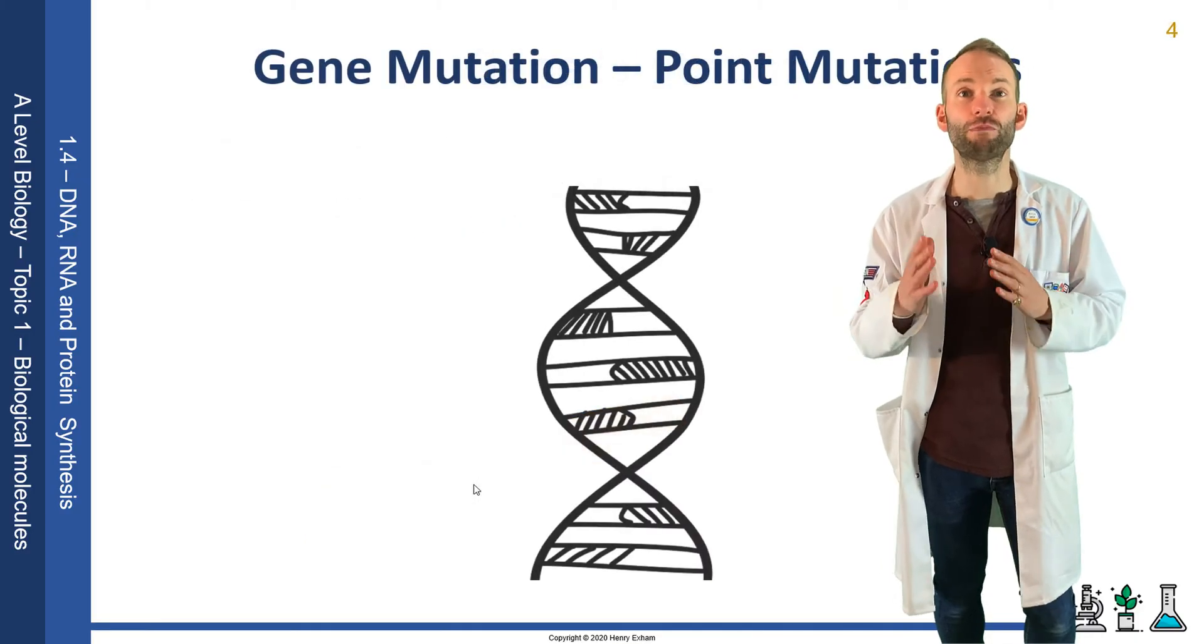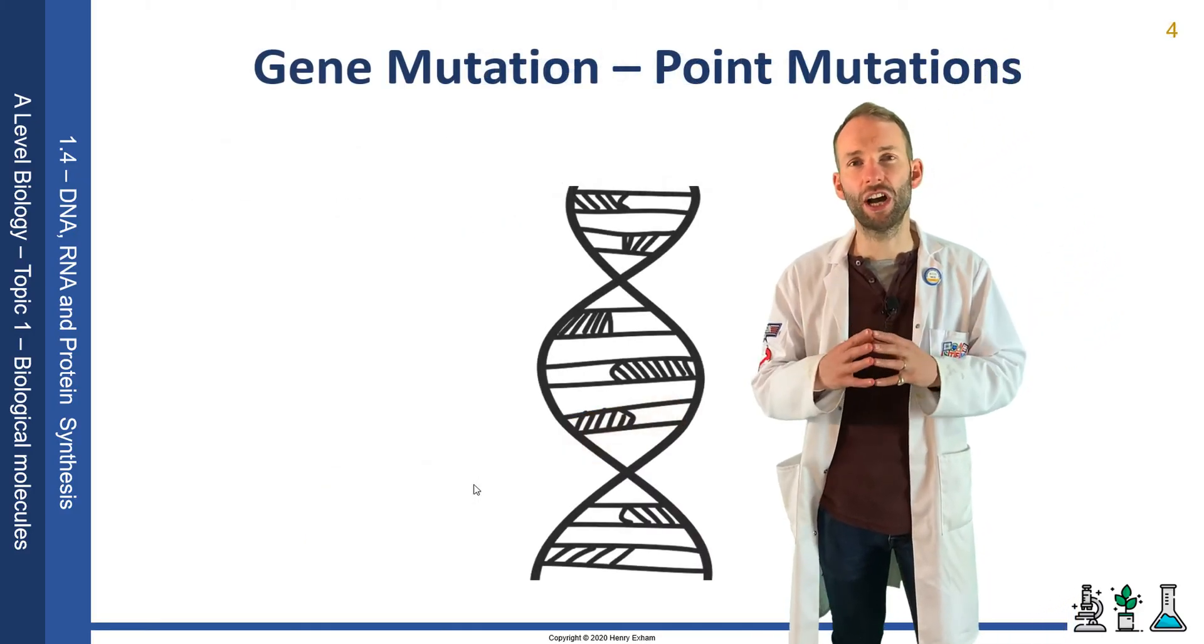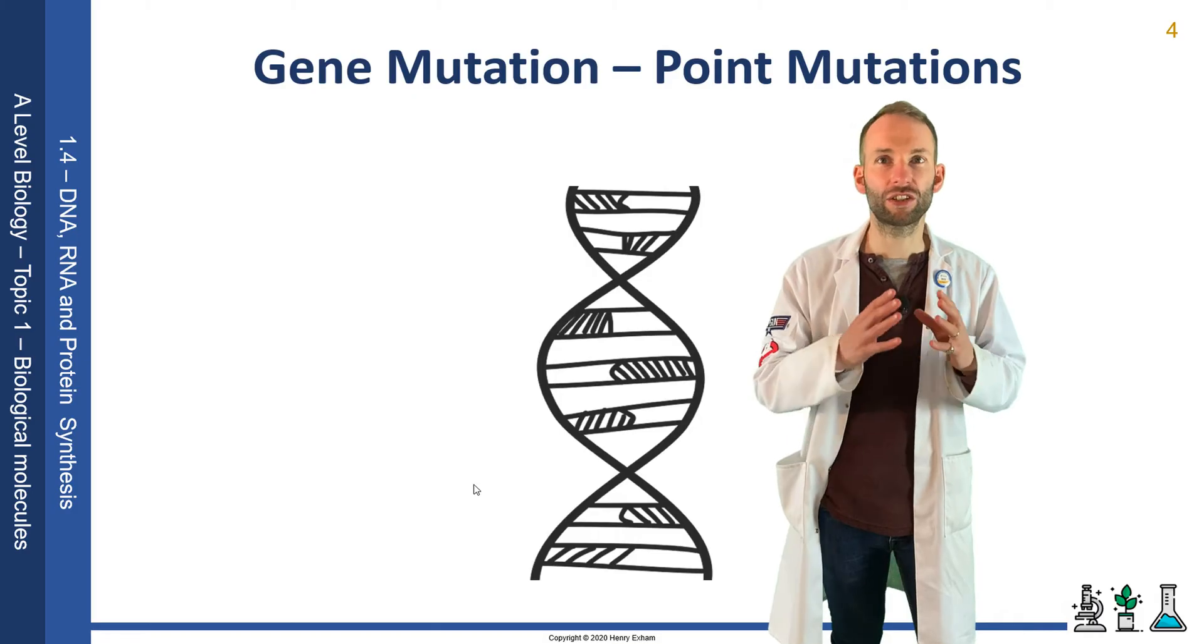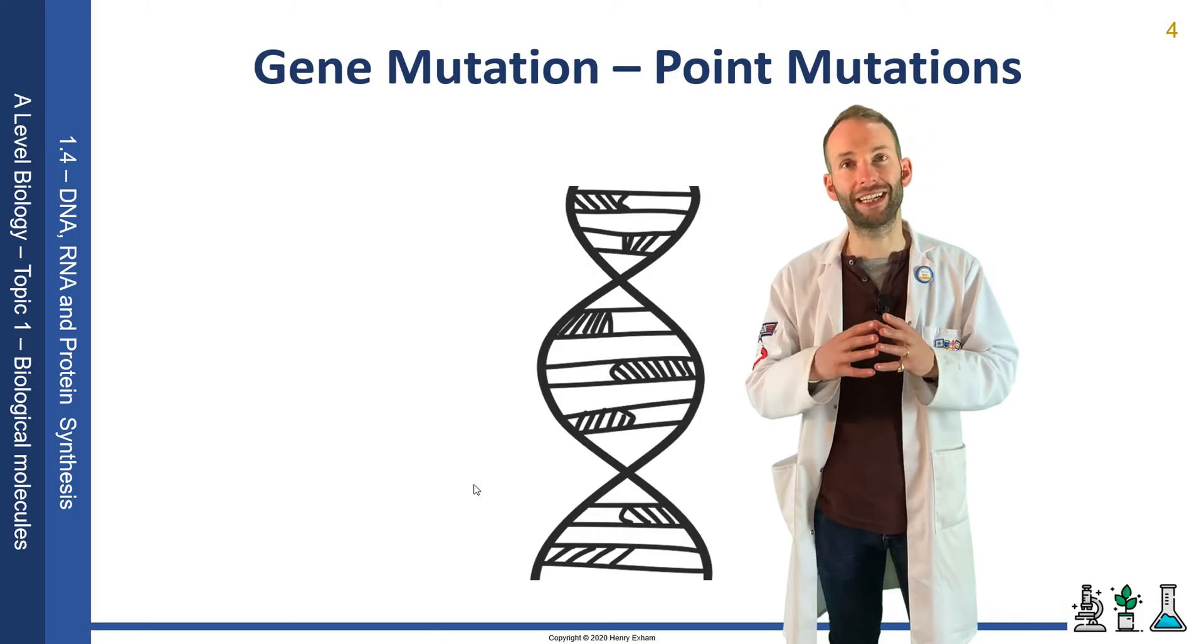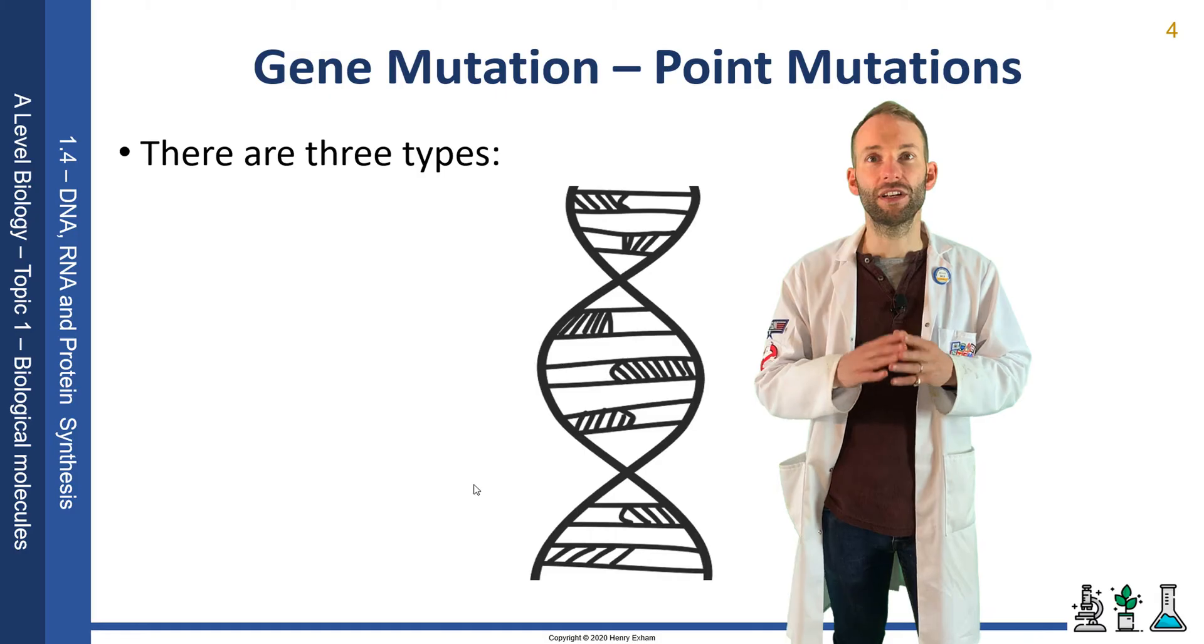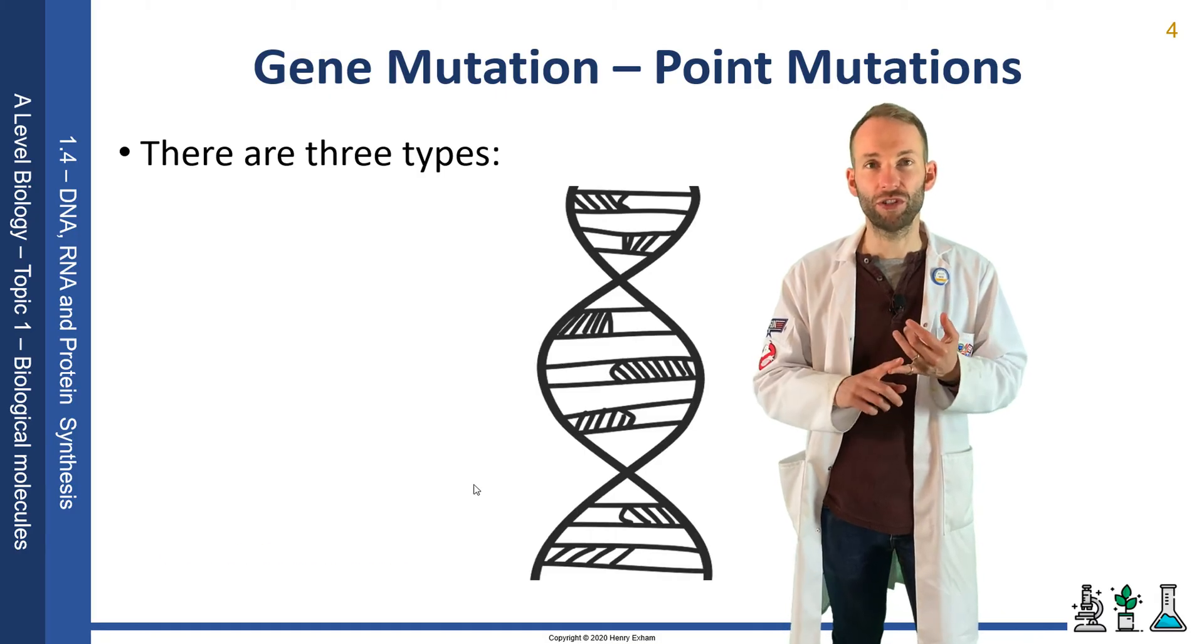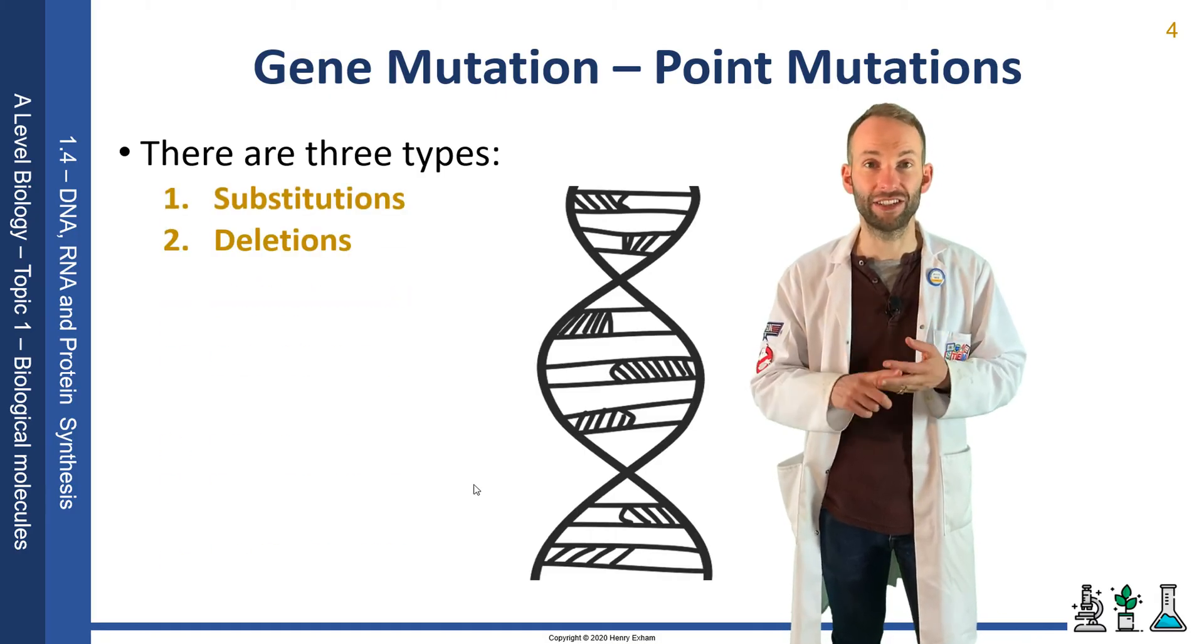Gene mutations, which are also known as point mutations, usually occur when a nucleotide isn't properly copied during transcription. Now there are three types that you should be aware of: substitutions, deletions, and insertions.